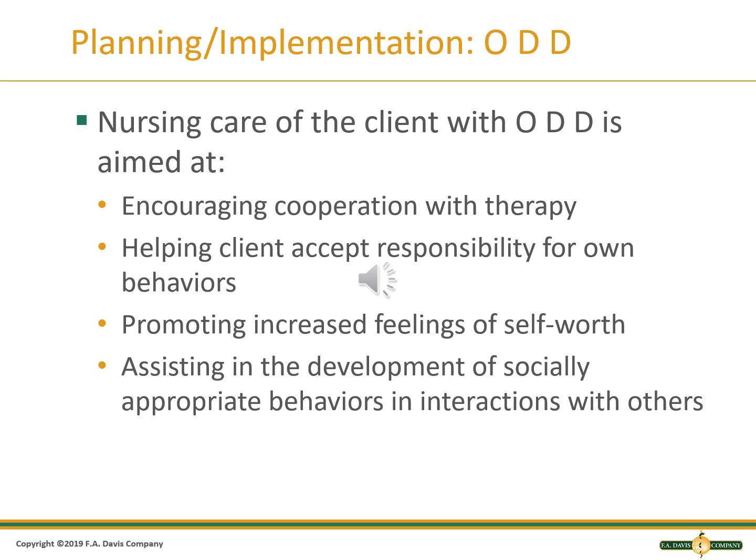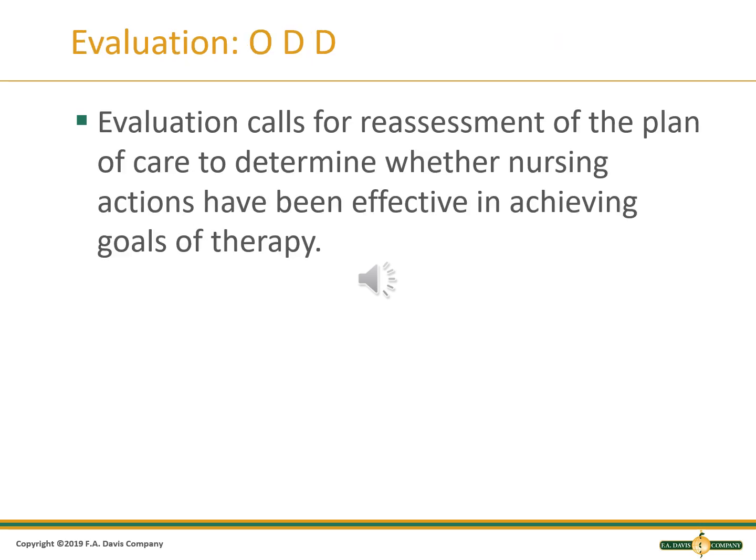Planning and implementation for ODD patients should match outcome goals. Interventions should encourage cooperation with therapy, ownership of behaviors, increased feelings of self-worth, and appropriate interaction with others. For evaluation, the nursing process requires reassessment of the plan of care to determine if the actions were effective and if the goals for therapy have been met.